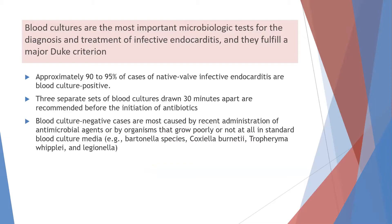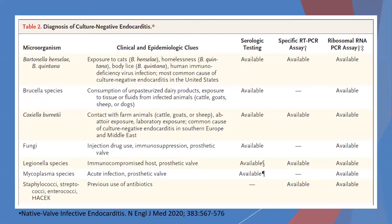Blood cultures are the most important microbiologic tests for diagnosis and treatment of IE, fulfilling a major criterion. Approximately 90–95% of native valve endocarditis cases are blood culture positive. Three separate sets of blood cultures drawn 30 minutes apart are recommended before initiating antibiotics. Culture-negative cases are most commonly caused by recent antimicrobial administration or by organisms that grow poorly in standard blood culture media — including Bartonella, Coxiella, and Legionella.